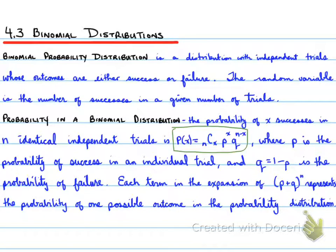4.3 Binomial Distributions. Binomial probability distribution is a distribution with independent trials whose outcomes are either a success or a failure. The random variable is the number of successes in a given number of trials.